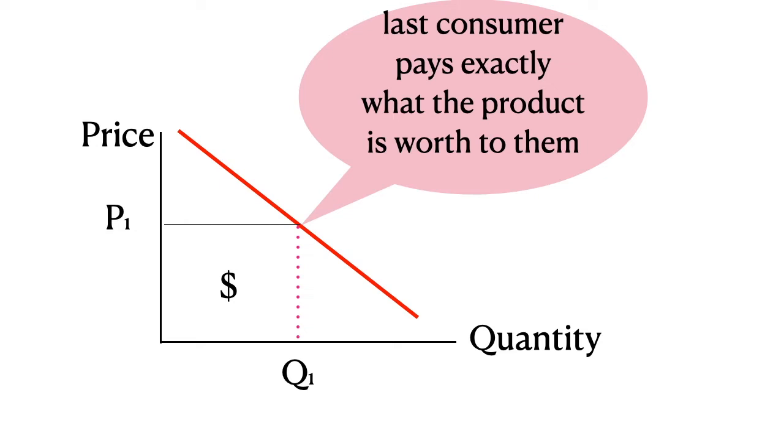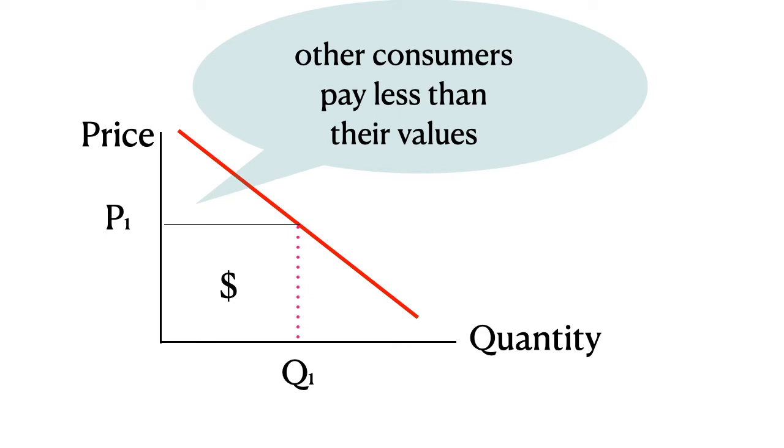So in that case, price would be equal to the marginal benefit for that consumer. But the other consumers, the ones to the left, the one between zero and Q1, they're going to pay less than their maximum value. They're going to be able to buy the product for less than it is worth to them.